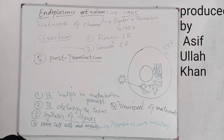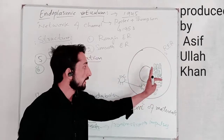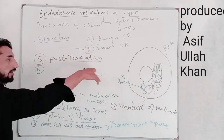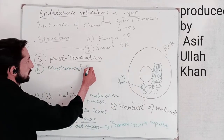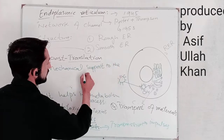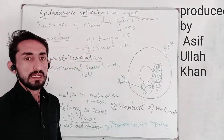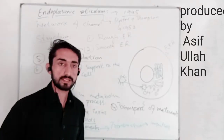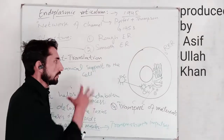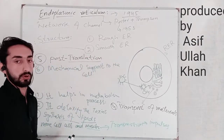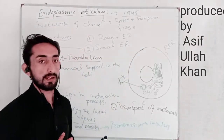Number six: it gives mechanical support to the cell. Both types of endoplasmic reticulum give mechanical support to the cell, helping it maintain its shape. The cell maintains its shape because of the cytoskeleton — microtubules, microfilaments, and intermediate filaments — but the ER also contributes to this mechanical support.